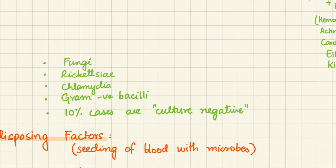Other causes include fungi, Rickettsia, Chlamydia, and gram-negative bacilli. Ten percent of cases are culture-negative, meaning blood culture comes back negative. This can be due to antibiotic therapy, difficulty in isolating the agent, or because organisms are deeply located in the vegetation and not readily released into the blood.